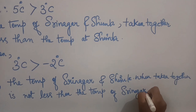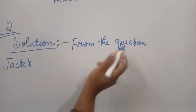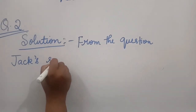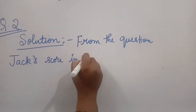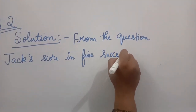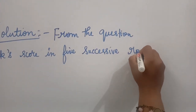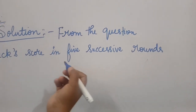In a quiz, positive marks are given for correct answers and negative marks are given for incorrect answers. If Jack's scores in 5 successive rounds were 25, minus 5, minus 10, 15, and 10, what was his total at the end? From the question, Jack's scores in 5 successive rounds are given.